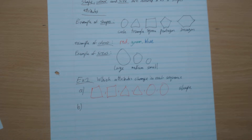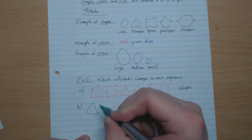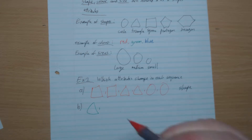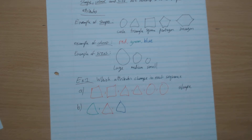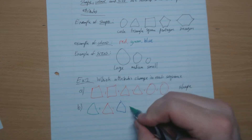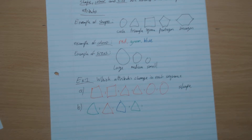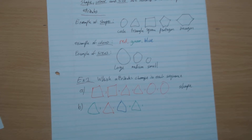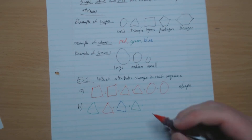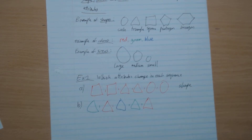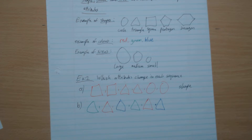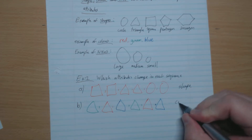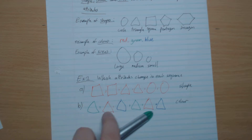For this next sequence, we notice that the shape is the same — always triangle. And we notice that the colors are changing. The size is roughly the same.